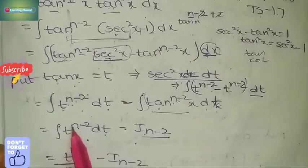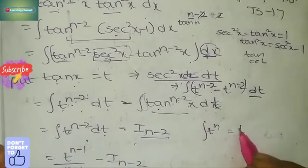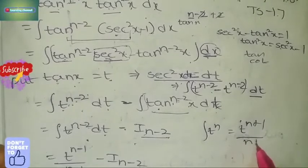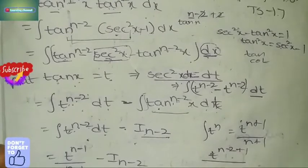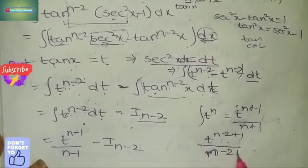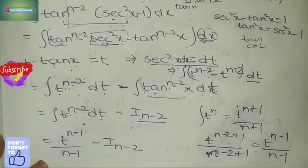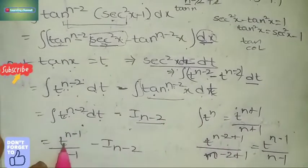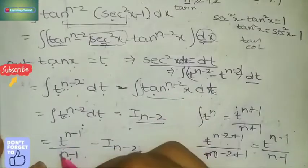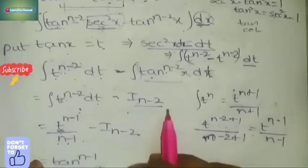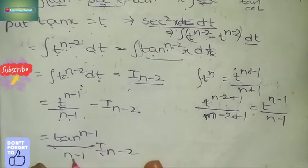Integrating t^(n-2) dt: by the power formula, t^(n-2+1) / (n-2+1) = t^(n-1) / (n-1). So the result is t^(n-1)/(n-1) minus I_(n-2). Now substitute back t = tan x (mandatory). The reduction formula for tan is: I_n = tan^(n-1) x / (n-1) minus I_(n-2).